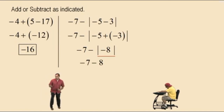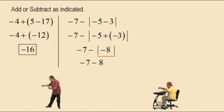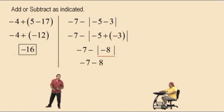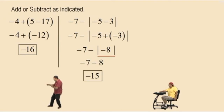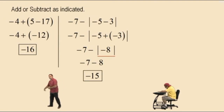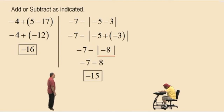Bring down your work. What's negative 7 subtract 8, Charlie? Negative 15. That's the same as saying negative 7 plus a negative 8, which is negative 15.